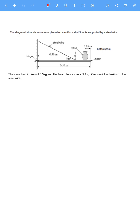The diagram below shows a vase placed on a uniform shelf that is supported by a steel wire. The fact that it's a uniform shelf indicates that the weight of the shelf would act in the center. The center of the beam is 0.25 meters because it's 0.5 across. So I'm going to draw a line there.